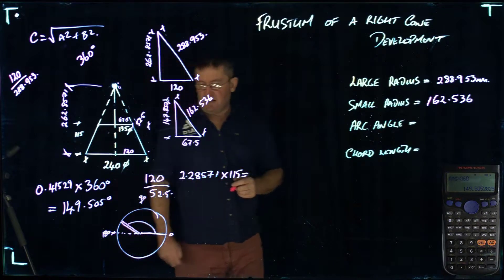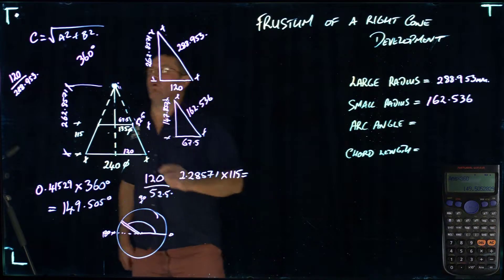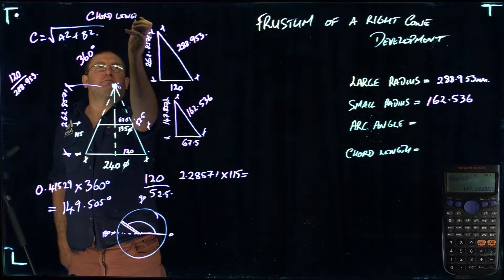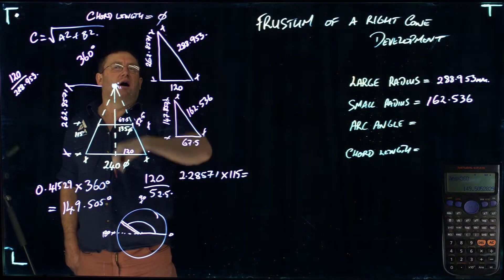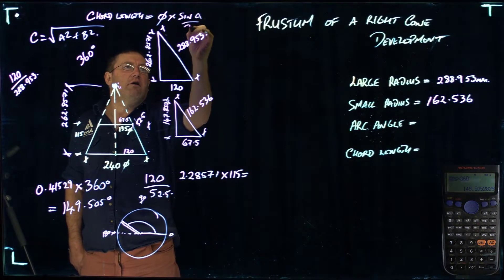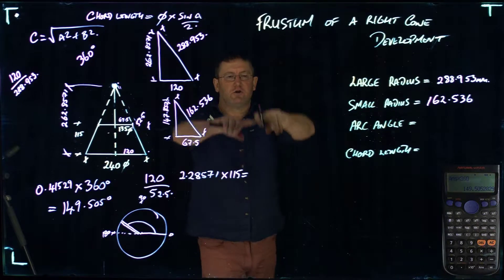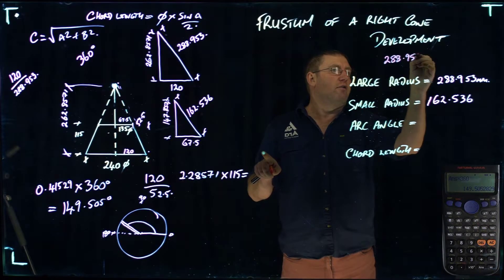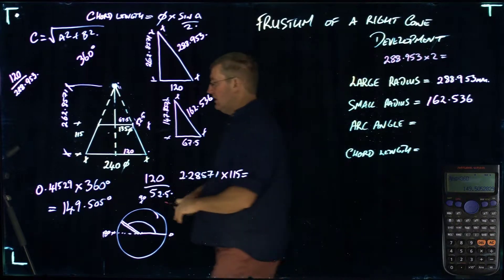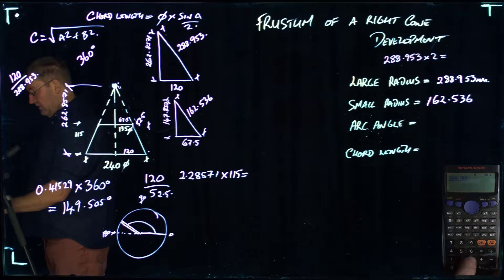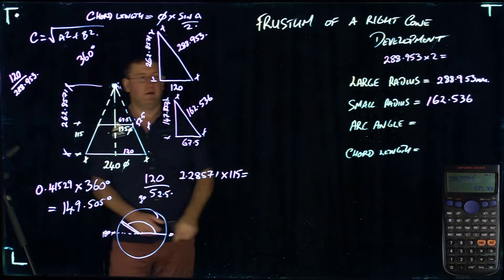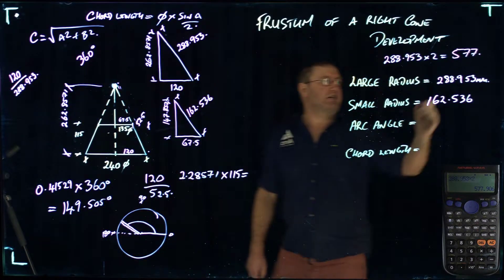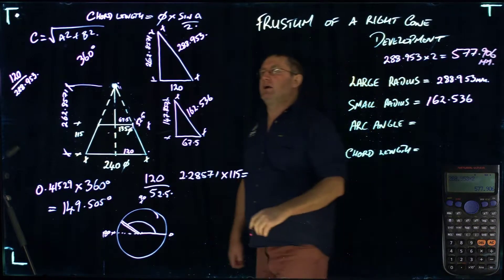Once we've got that, then we can start to use the chord length formula. Chord length equals the diameter times sine A over 2. Well the diameter of the circle that we are going to draw is twice the large radius. So 288.953 times 2 equals 577.906 millimeters.